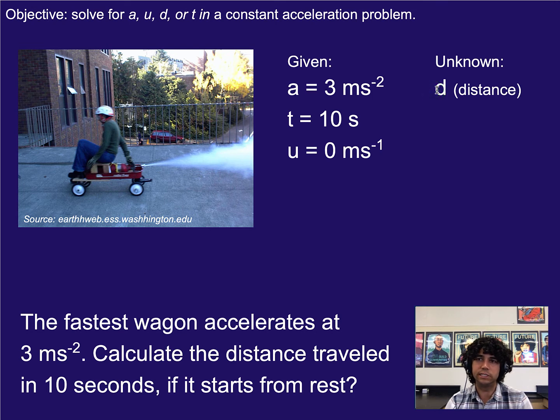Our unknown is d or distance and so we're going to look on our equation sheet and find an equation that has those variables in it. It just so happens to be the one we just showed. d equals ut plus one half at squared.